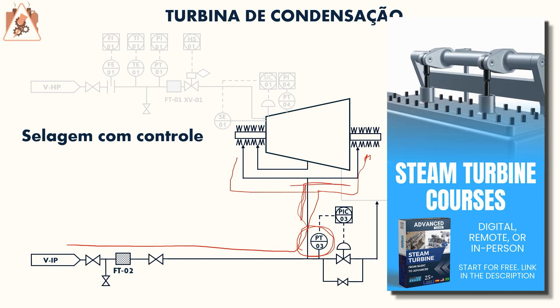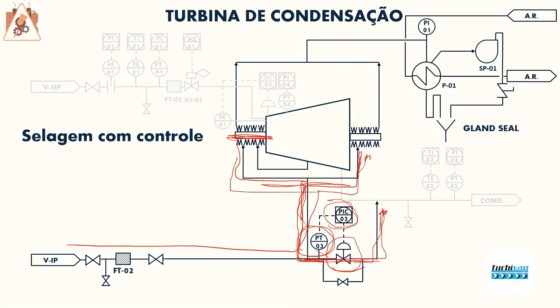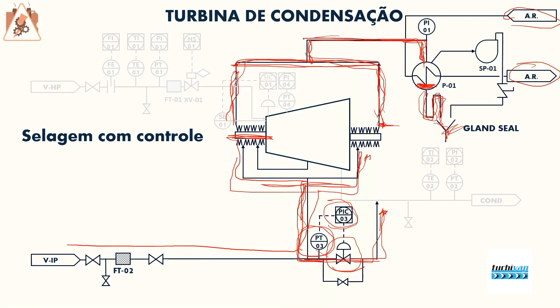When the turbine is stopped, the intermediate steam comes and feeds both sides of the turbine. We have a pressure transmitter here that reads the pressure in this header and carries out control via a pressure indicator controller. The previous system was made up of two chimneys; in this case we don't have chimneys.